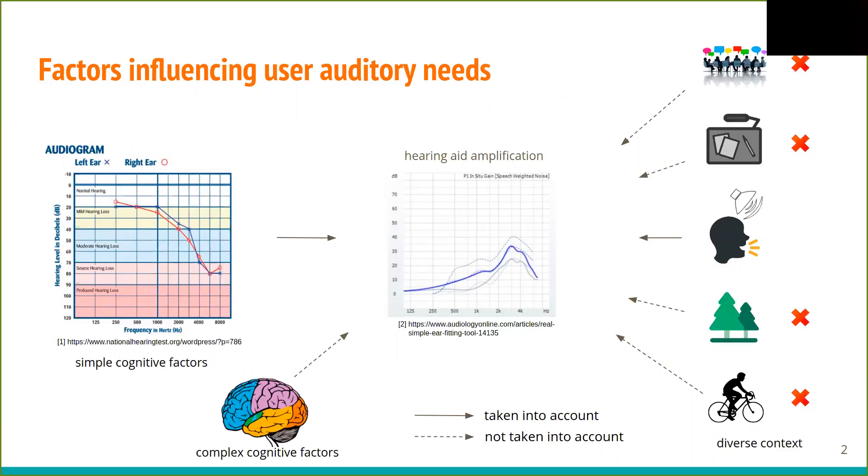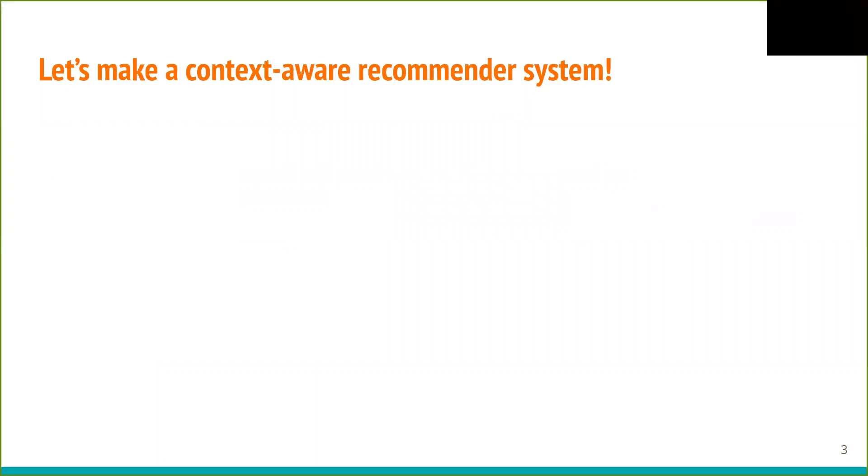How can we personalize settings for different users and different contexts? Let's make a context-aware recommender system. But where to start?